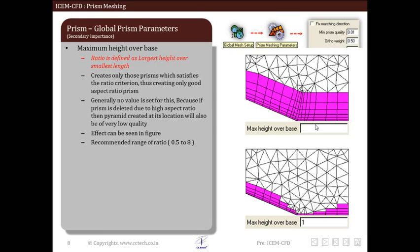In the second case elements which do not specify ratio criteria are deleted which creates discontinuous prism layers, but aspect ratio of prism layer element created follows the specified criteria. So this is the effect of maximum height over base.